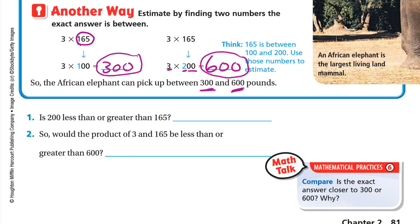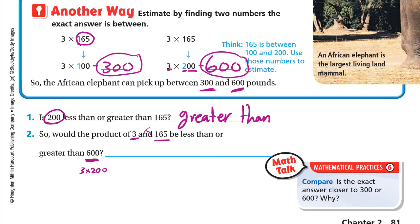Is 200 less than or greater than 165? 200 is greater than 165. So should the product of 3 and 165 be less than or greater than 600? Since 600 equals 3 times 200, and 165 is less than 200, multiplying 3 by 165 will give a product less than 600.